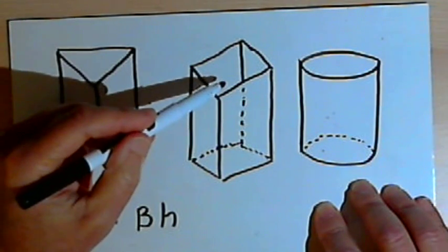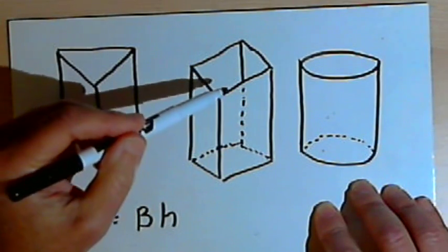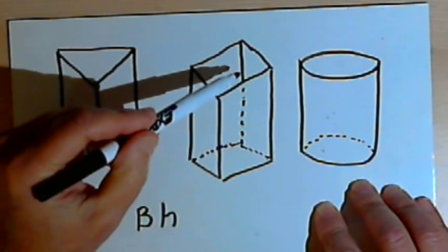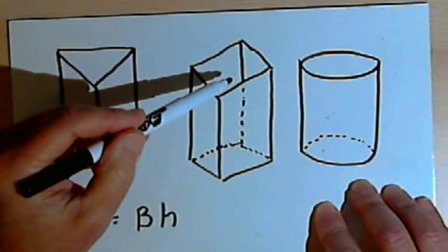Then I've got a rectangular prism. So the bases of a rectangular prism are rectangles which are congruent with each other and parallel to each other.